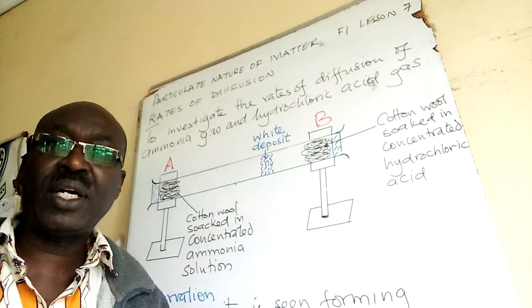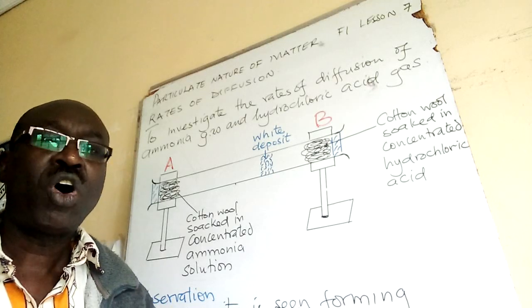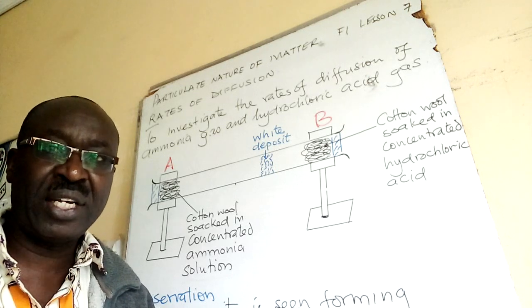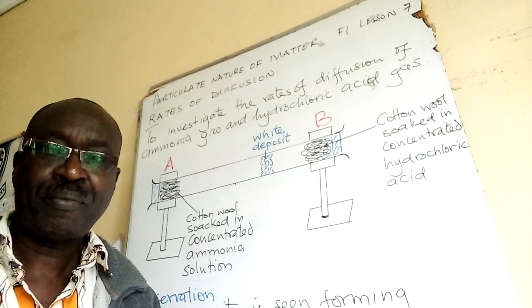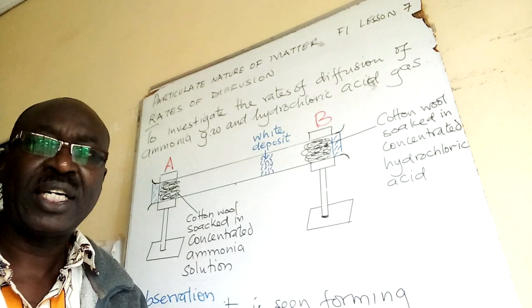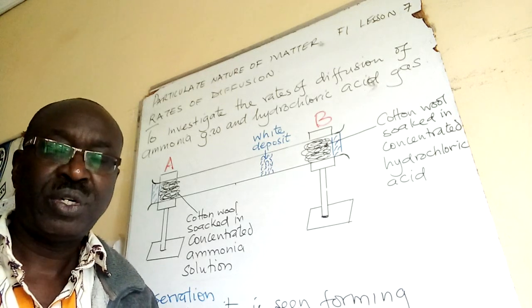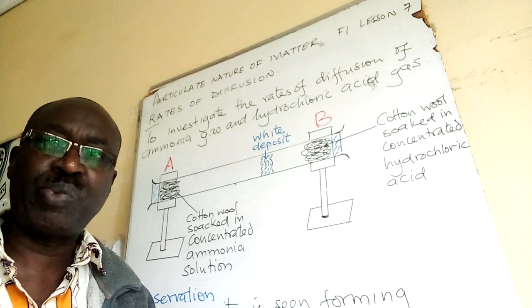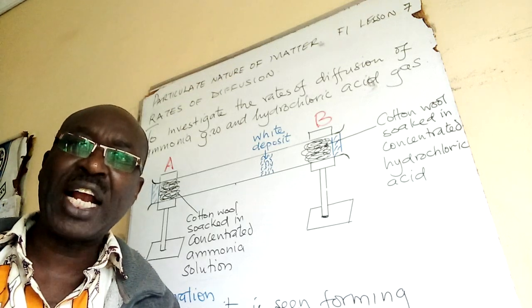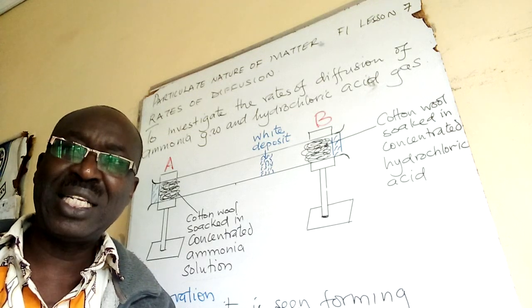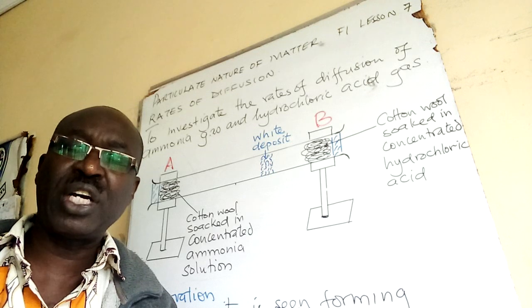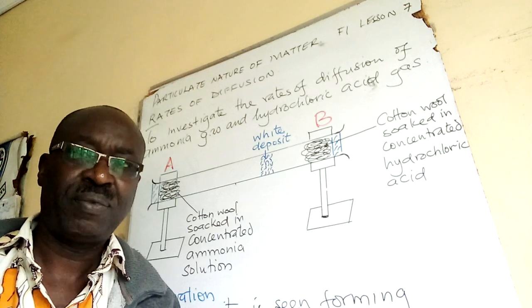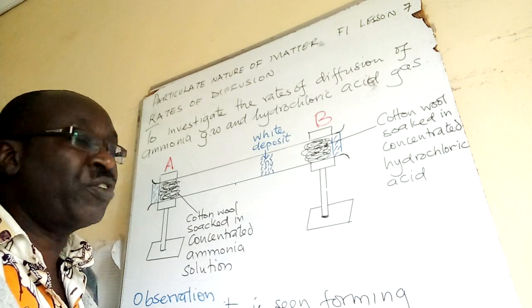Hello everyone, welcome to our lesson 7 on particulate nature of matter. This will be our last lesson so that we can also push other topics. Today we are going to look at rates of diffusion. We are at the core of our experiment, focusing on at least two gases because this is about comparison — that's why we are talking about the rate of diffusion.